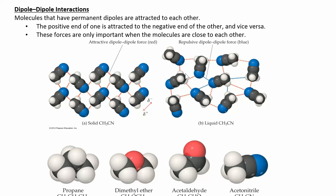Now we can look at polar molecules and dipole-dipole interactions. When you have a polar molecule, you have a permanent dipole moment — one side is positive, one side is negative. Those positive and negative sides line up with other molecules, so the positive end of one molecule is attracted to the negative end of another molecule.